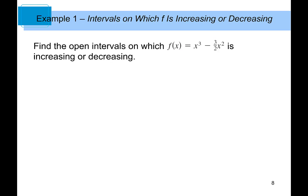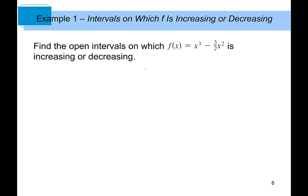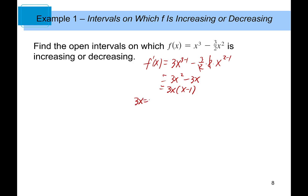Let's look at the first example: find the open intervals on which f(x) = x³ - (3/2)x² is increasing or decreasing. We apply the test. First, find the derivative of f(x). Applying the power rule, we get f'(x) = 3x² - 3x. Factoring out 3x gives 3x(x - 1). Using the zero-factor property, setting 3x = 0 gives x = 0, and setting x - 1 = 0 gives x = 1. So we have two critical numbers: x = 0 and x = 1.